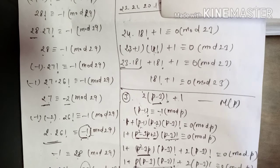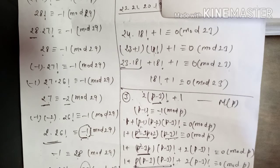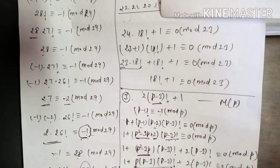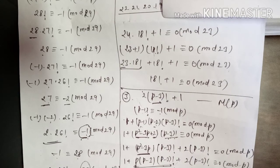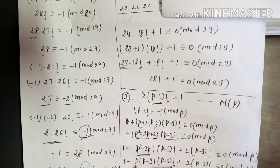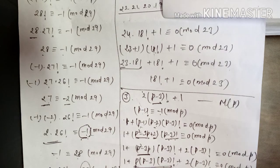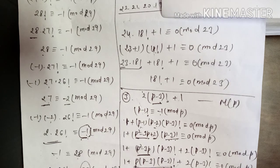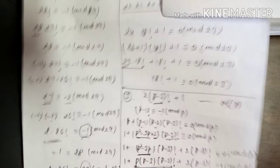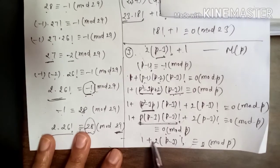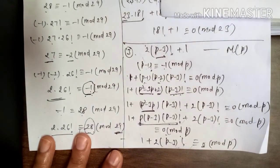After removing the term divisible by p, we get 1 + 2(p-3)! ≡ 0 (mod p). This means p divides 2(p-3)! + 1 since the remainder is 0. Therefore 2(p-3)! + 1 is a multiple of p, which is exactly what we had to prove.